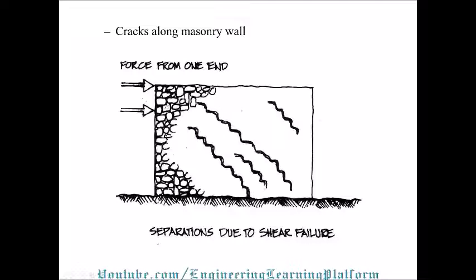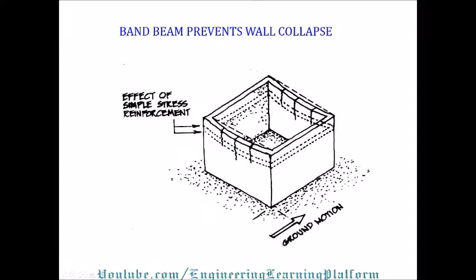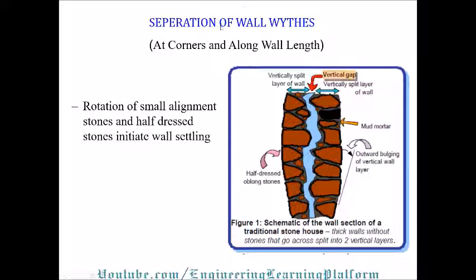This is a typical wall showing multiple cracks which cause the collapse of the stone structure. A band beam prevents wall collapse — as already discussed in masonry structures, the band beam ties the different parts of the lateral force resisting system, which is the bearing wall in this case, and prevents sudden collapse due to progressive cracking and separation of wall wythes.